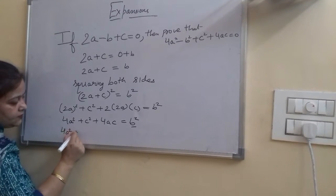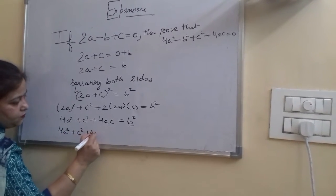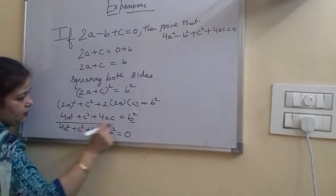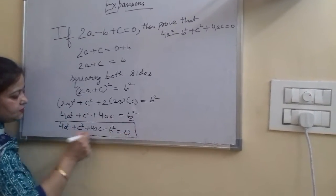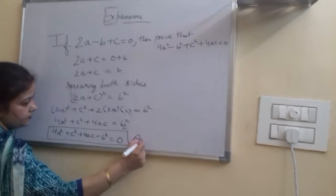Taking b square to the left-hand side, we get 4a square plus c square plus 4ac minus b square equal to 0. This is the required answer.